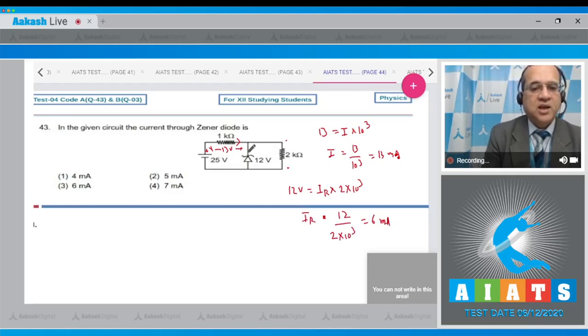Now by KVL at the junction, this current was coming 13 milliampere and 6 milliampere goes to this side. So the rest current will be crossing this one. I equals IR plus the current through the zener. This is 13 milliampere and the current through is 6 milliampere. Therefore Iz, the current through the zener diode, will be equal to 7 milliampere. The answer to this question is the fourth option.